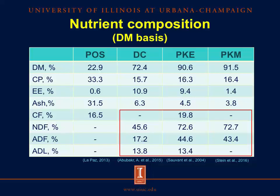In terms of fiber concentration, all byproducts have a concentration that is high and could be a limitation for pigs. Palm oil sludge and decanter cake have been evaluated and used in ruminant diets, but no data in pigs is available. Therefore, palm kernel expeller and palm kernel meal are the most important byproducts in swine nutrition, and the nutritional value of these byproducts will be discussed in the next podcast.